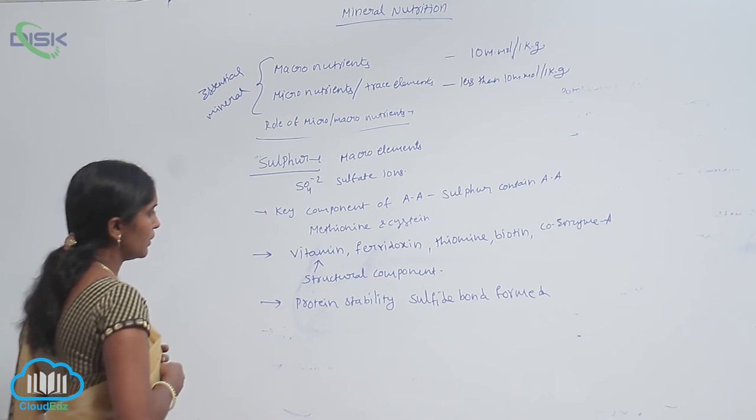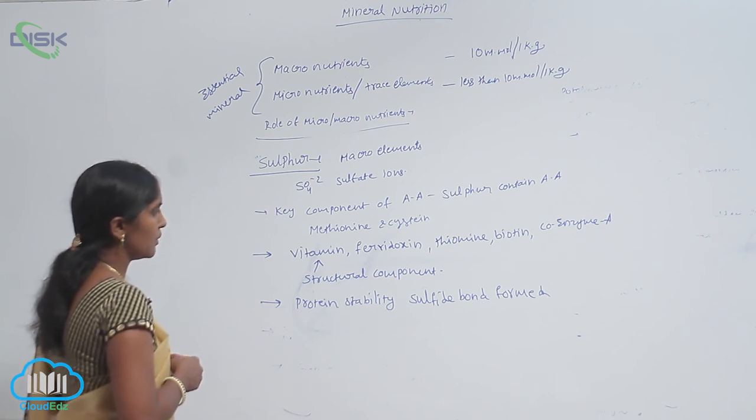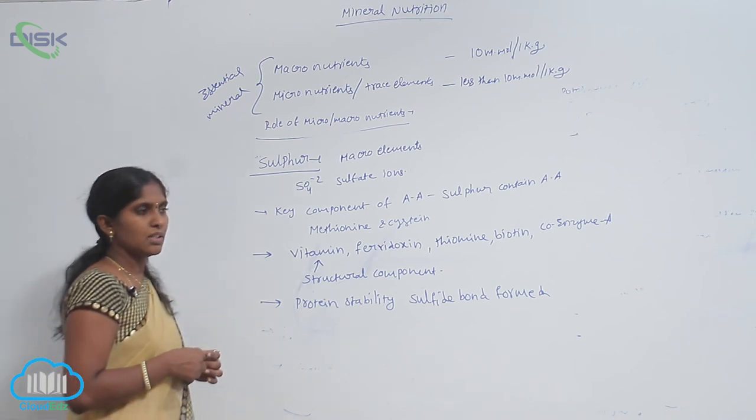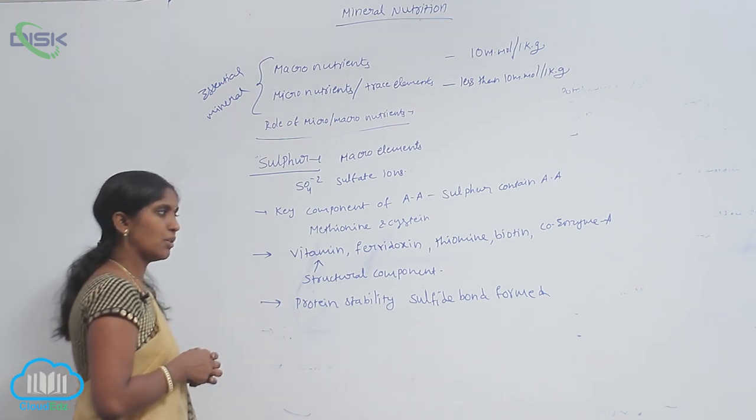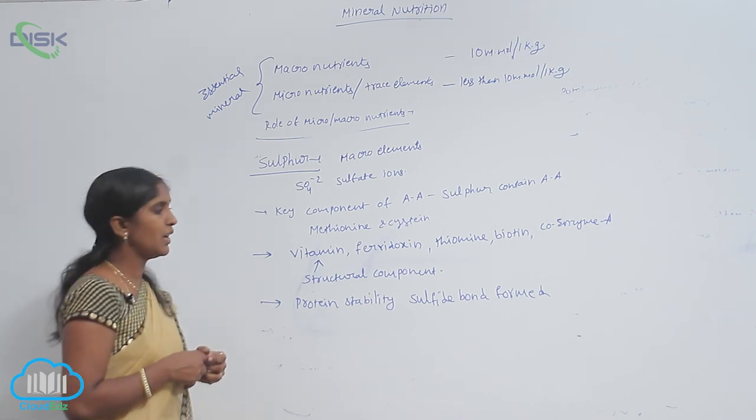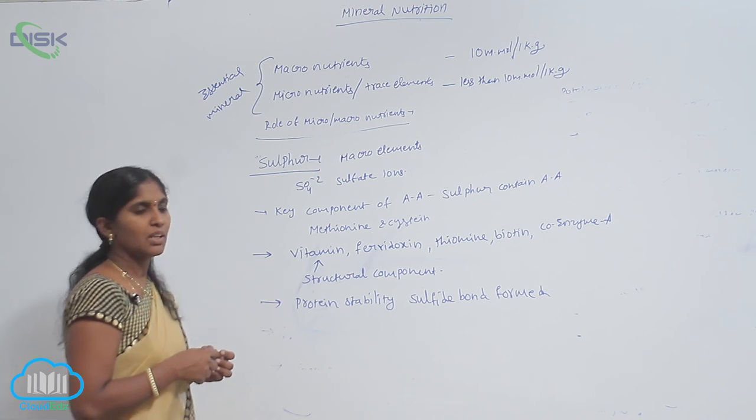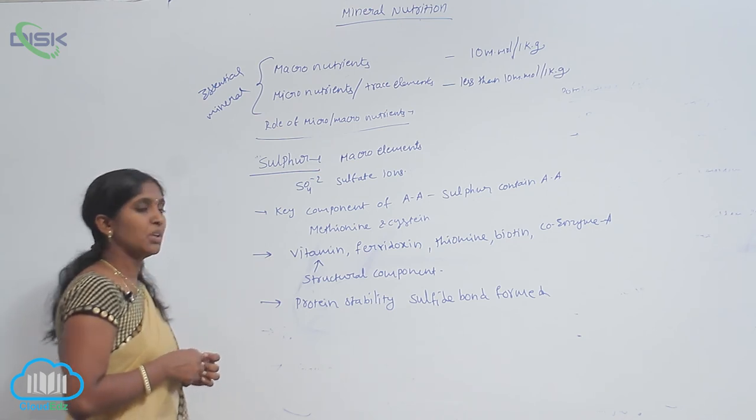And a few vitamins like pyridoxine, thiamine, biotin, and coenzyme A also have sulfur as a structural component. The sulfur forms sulfide bonds. The sulfide bonds present in proteins mediate protein stability.